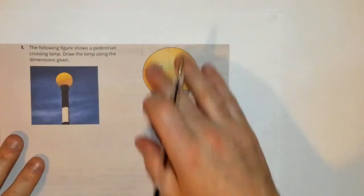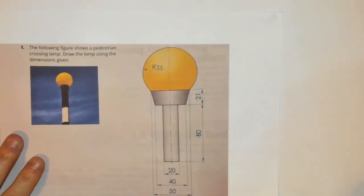So there we have it, the structure has been built for the pedestrian crossing lamp. Now what we are going to do is learn how to put in this circular ball on top of it for the light.